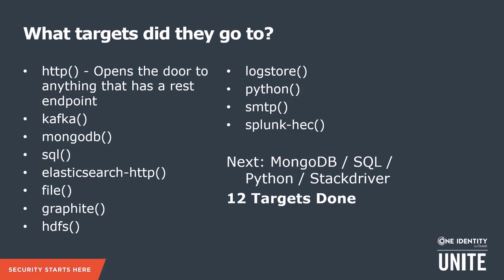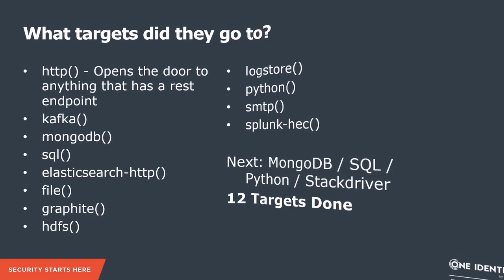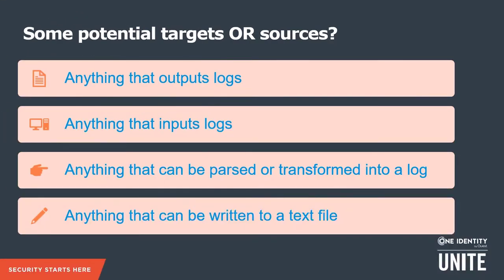Look at the targets they sent to — these are the 12 that were done, and they've got four more planned: MongoDB, SQL, Python, Stackdriver — going to 16 targets total. This is a real company doing real work. Targets and sources can quite often be one or the other or both. Anything that outputs logs, inputs logs, can be parsed or transformed into a log. Anything that can be written to a text file can be turned into a log.